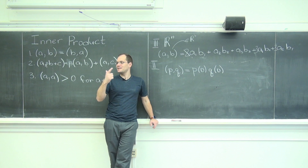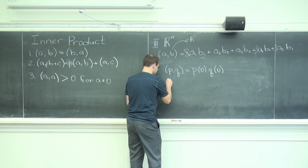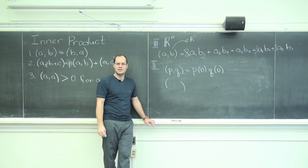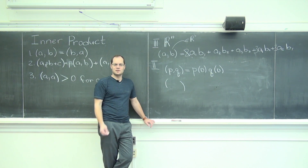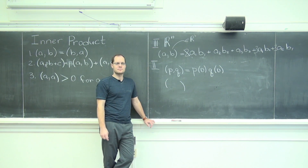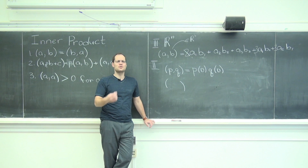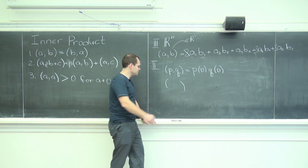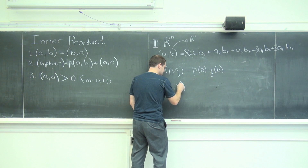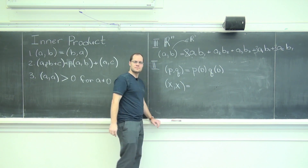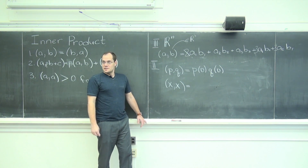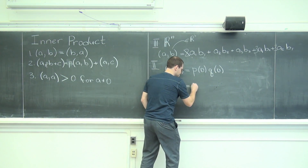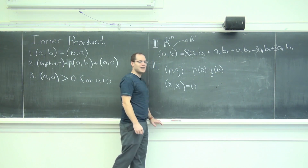But positive definiteness — Ben says no, and so he has to give me a counterexample: one polynomial dotted with itself that would not be positive. What happens when I dot X with X? Zero, because X evaluated at zero is zero. So not positive definite.